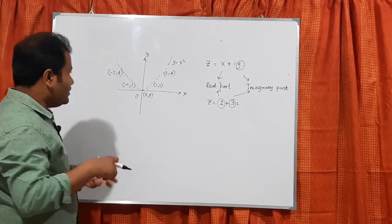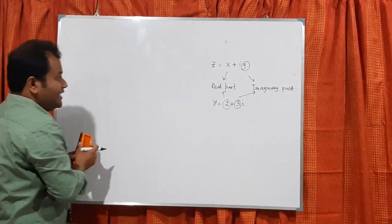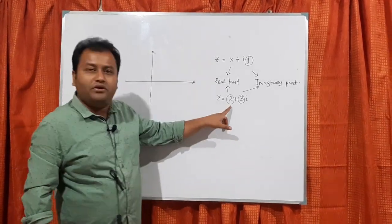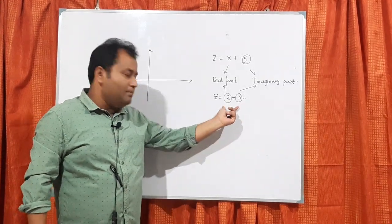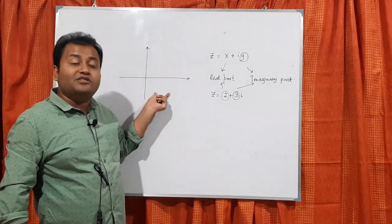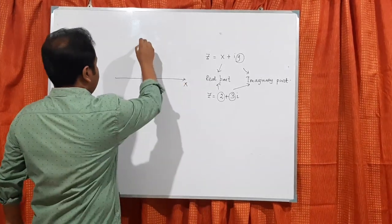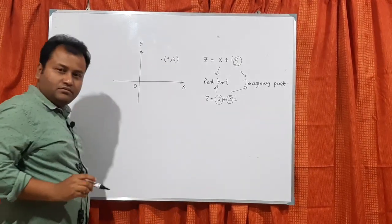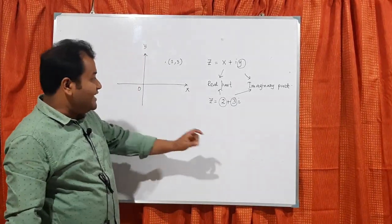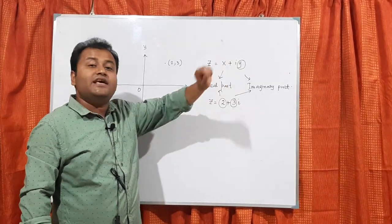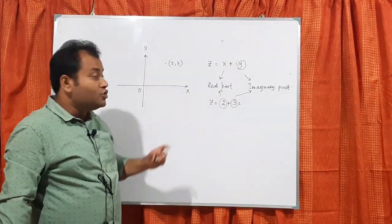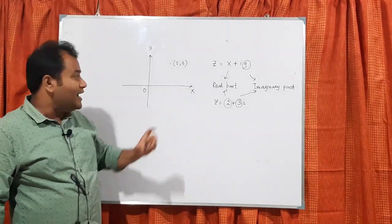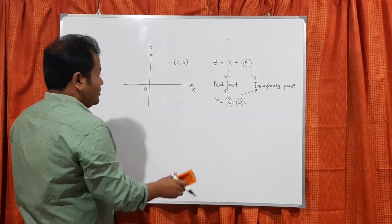Now, like the two-dimensional plane, I want to take a graph and look at the number 2 + 3i. I want to plot this number in the x-y plane. So 2 + 3i corresponds to the point (2, 3). The meaning is very clear: any complex number x + iy is equivalent to a two-dimensional point (x, y). So 2 + 3i is nothing but the point (2, 3).